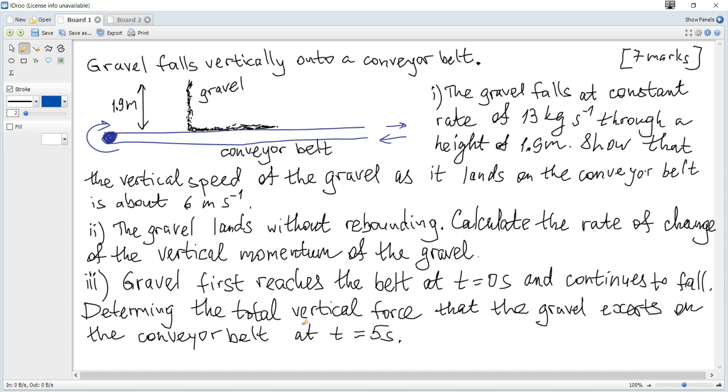Gravel falls vertically onto a conveyor belt. The gravel falls at a constant rate of 13 kg per second through a height of 1.9 meters. Shows that the vertical speed of the gravel as it lands on the conveyor belt is about 6 meters per second.